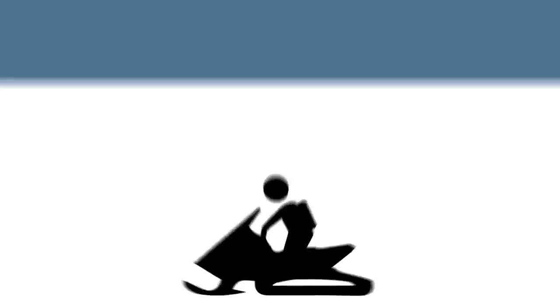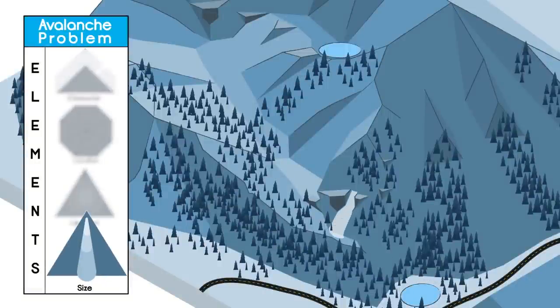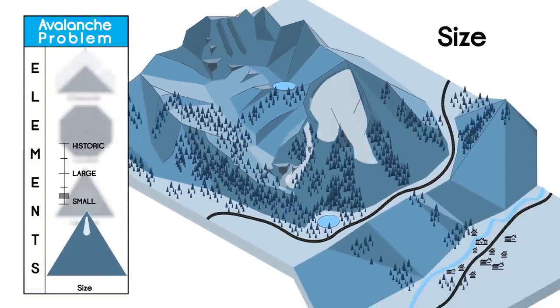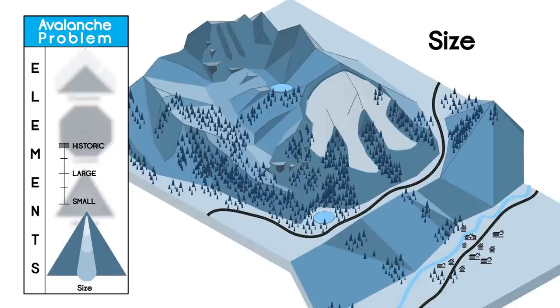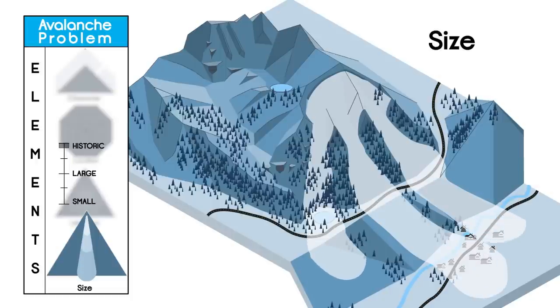Most avalanches are large when compared to a human, and all are dangerous if they are encountered in consequential terrain. Size is described using terms such as small, large, and historic. The size shown in a forecast is the largest expected avalanche.